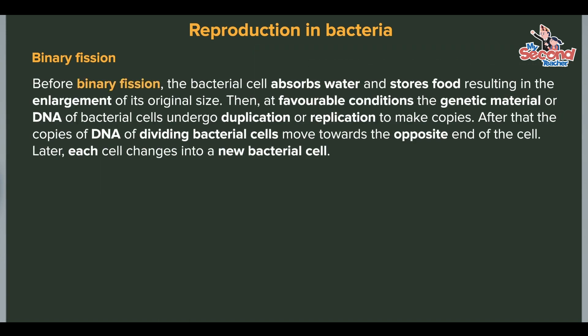Before binary fission, the bacterial cell absorbs water and stores food, resulting in the enlargement of its original size. Then, at favourable conditions, the genetic material or DNA of the bacterial cell undergoes duplication or replication to make copies. After that, the copies of DNA move towards the opposite end of the cell. Later, each side changes into a new bacterial cell.